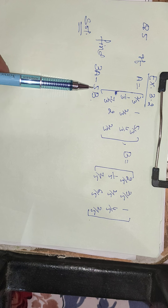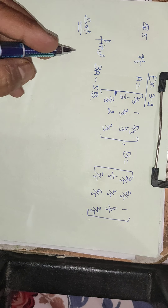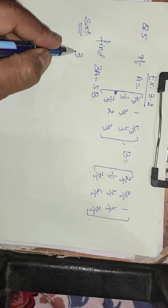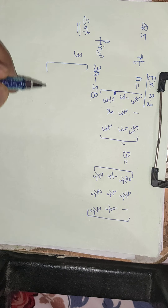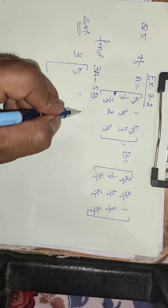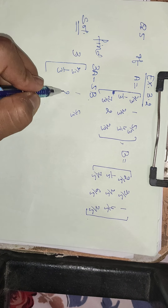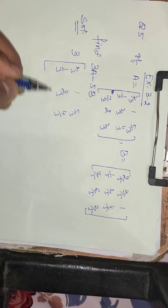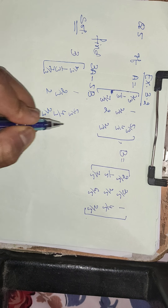We will find the value of 3A minus 5B. First of all, we will write 3 as given, and then we will write matrix A's values: 1/3, 2/3, 4/3, 7/3, 2, and 2/3.